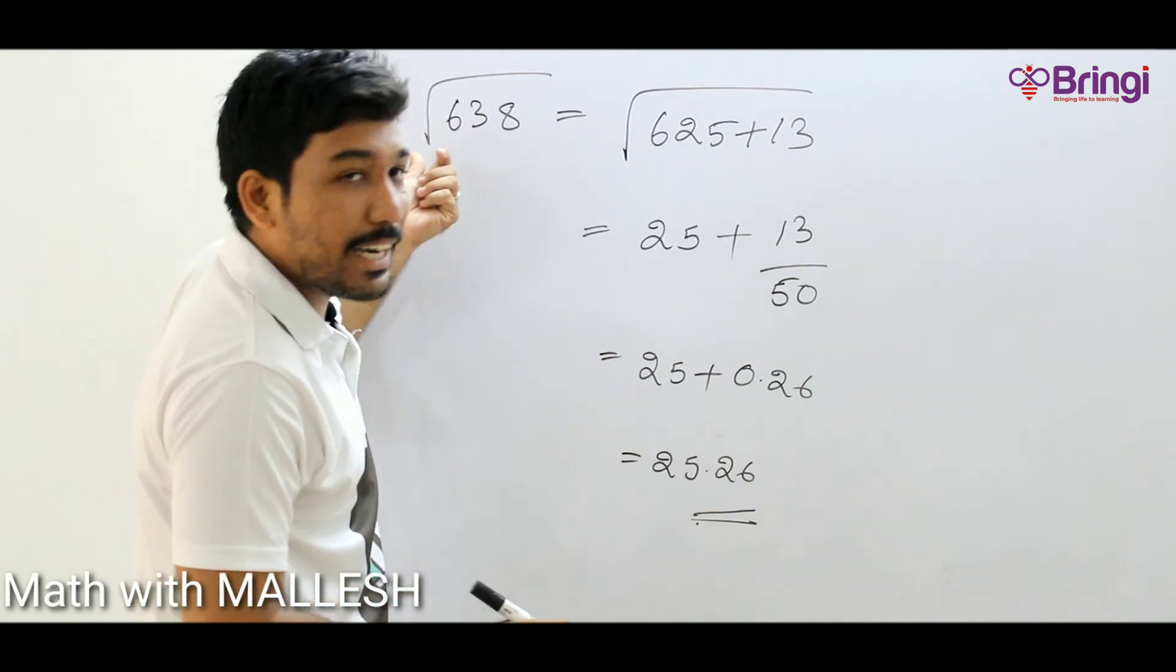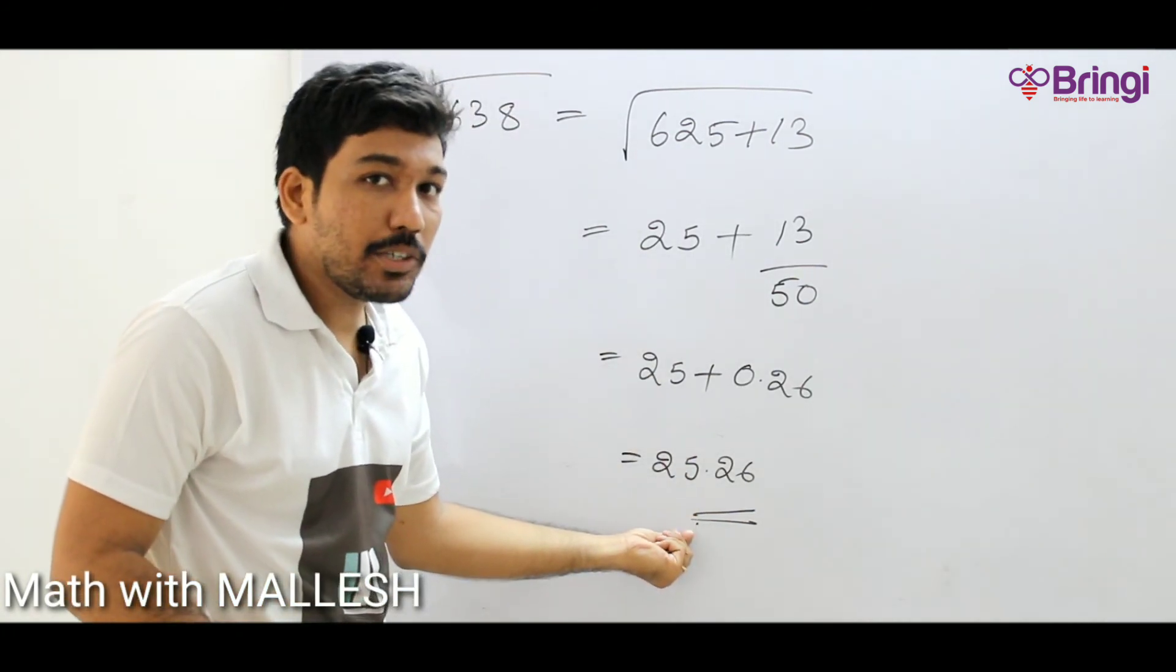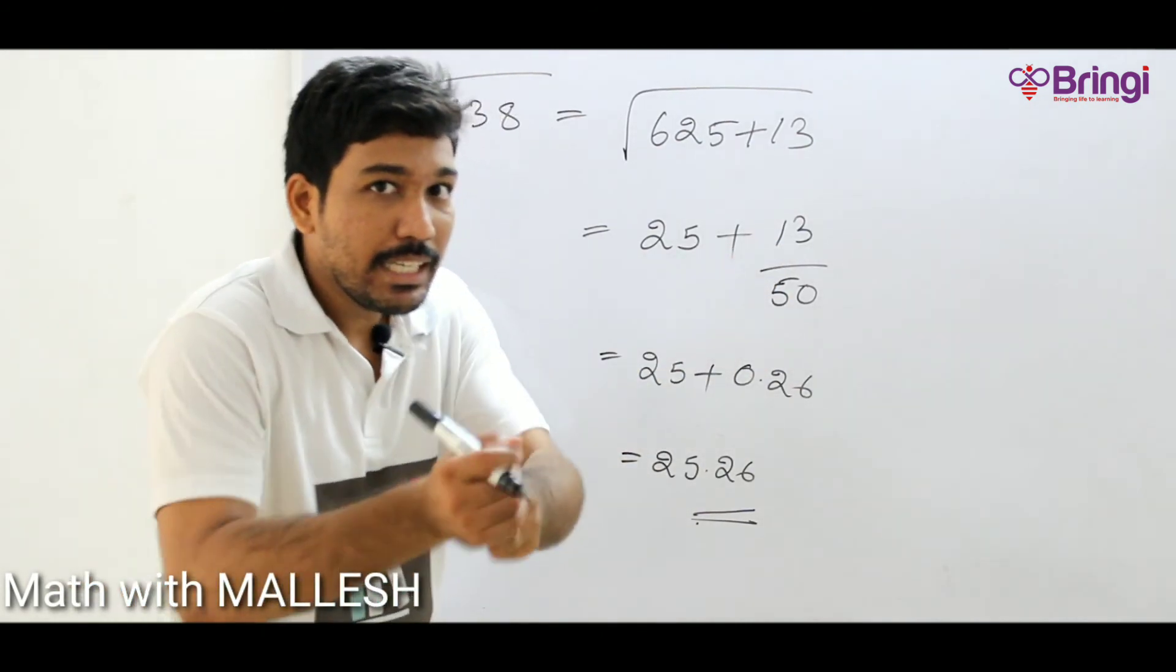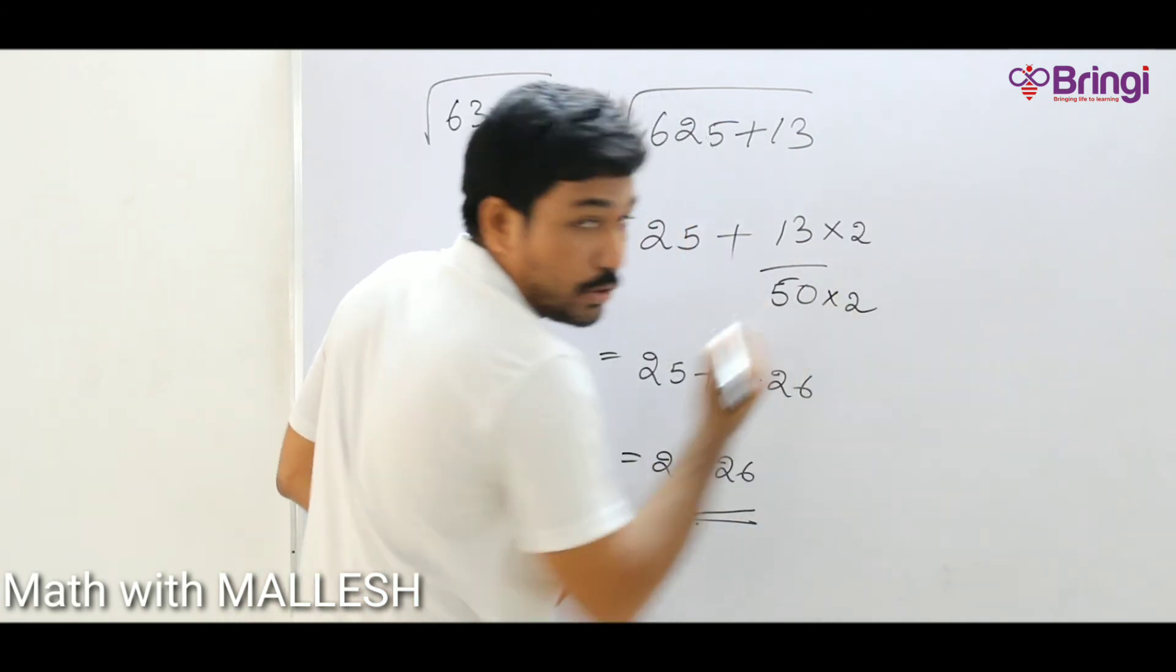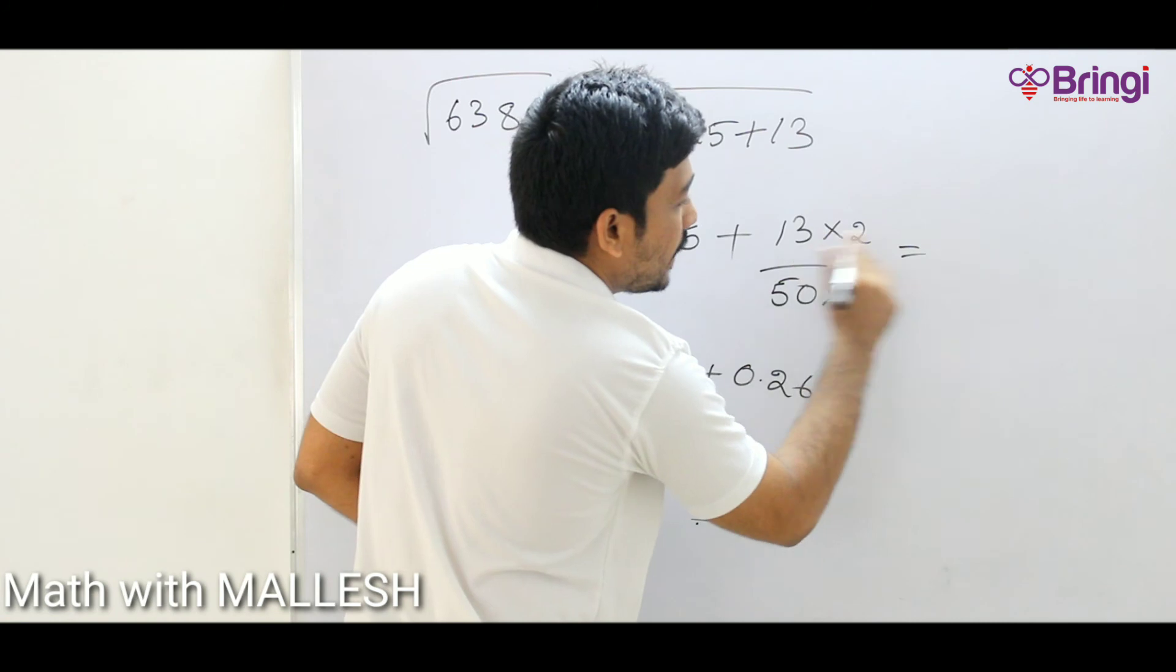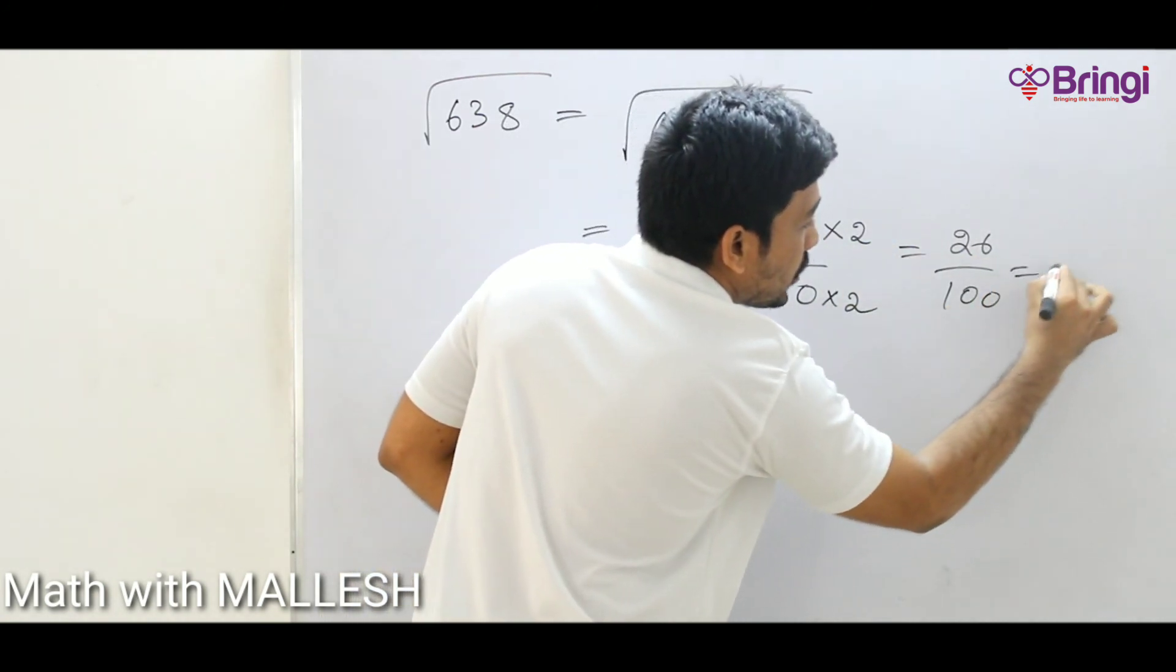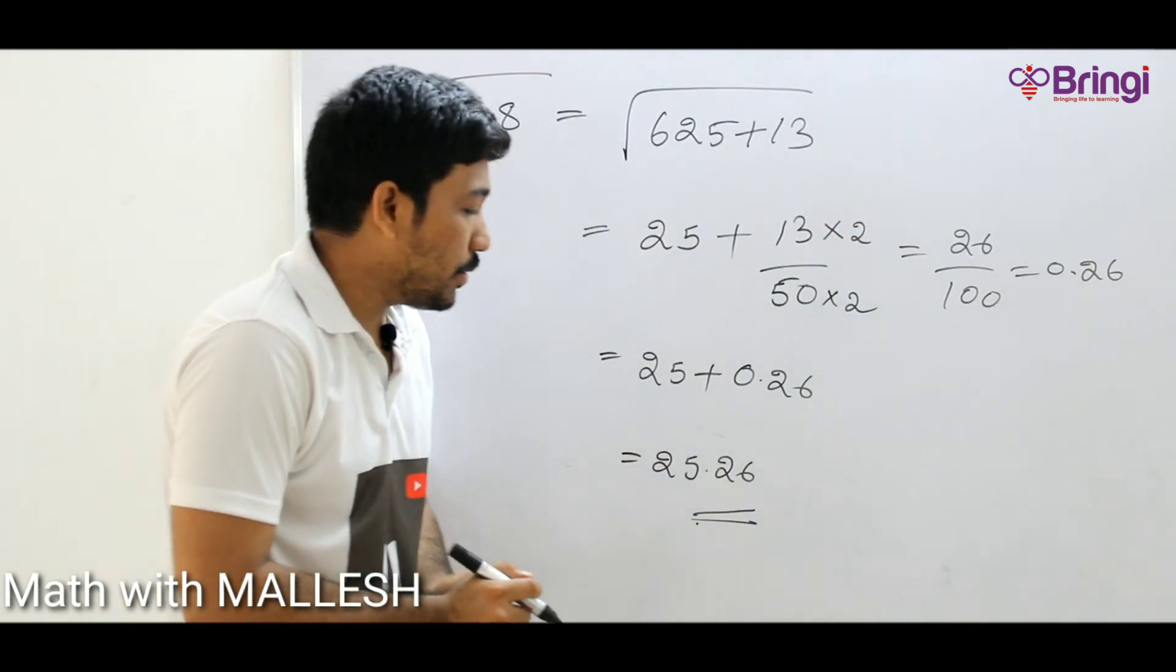Value 0.26, so the final answer is 25.26. If you have any doubt, open calculator and write root 638 and you will get 25.26 exact answer, closest answer. And what about 13 by 50? In this time, multiply with the 2 and divide with the 2. Now 13 to 26 by 52 is 100, so simply 0.26. So final answer is 25.26.